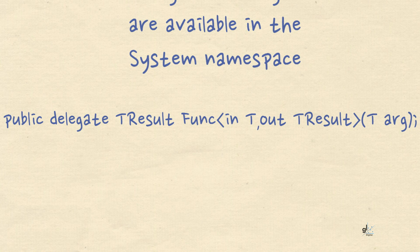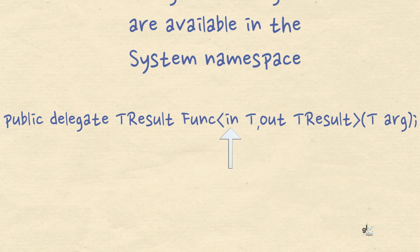Let's first look at Func. The T represents a placeholder where the developer can pass a type parameter in order to strongly type the parameter relevant to the encapsulated method at compile time. The 'in' keyword in this context means that the parameter type is contravariant. We are not going to discuss covariance and contravariance in this video as these topics were covered in the previous tutorial. There are 17 Func delegates available in the System namespace.